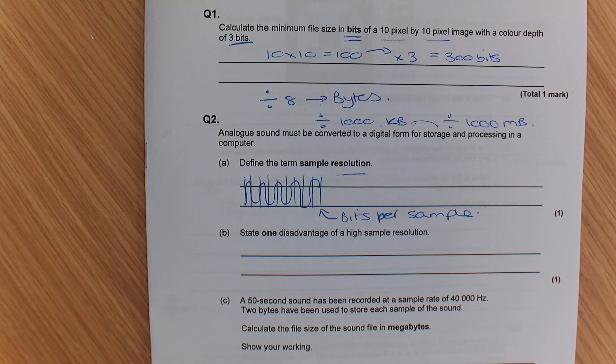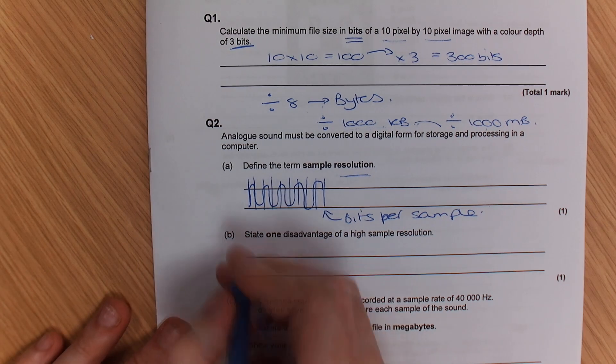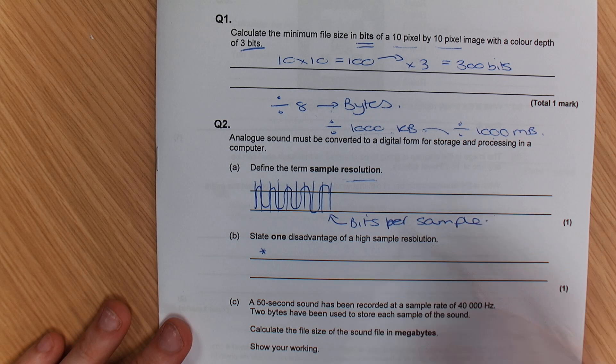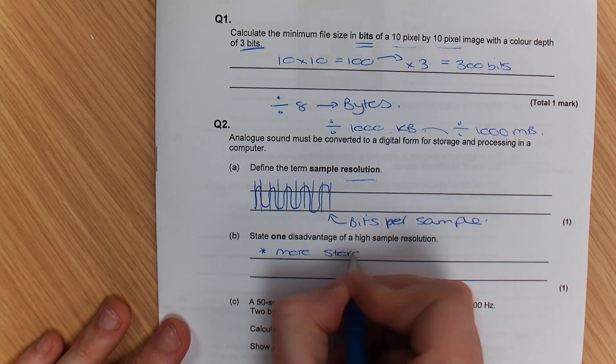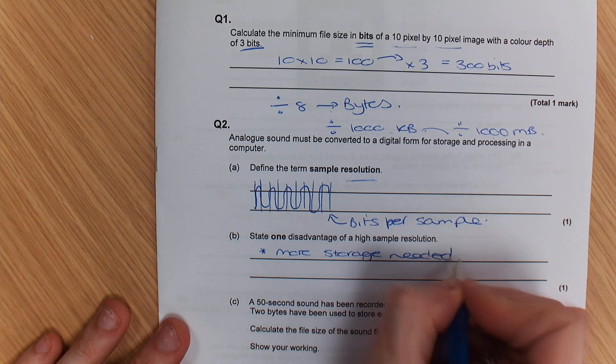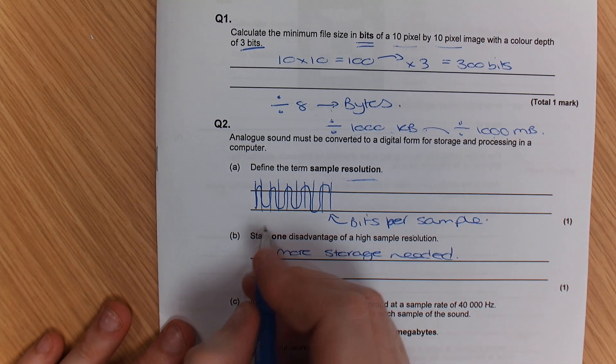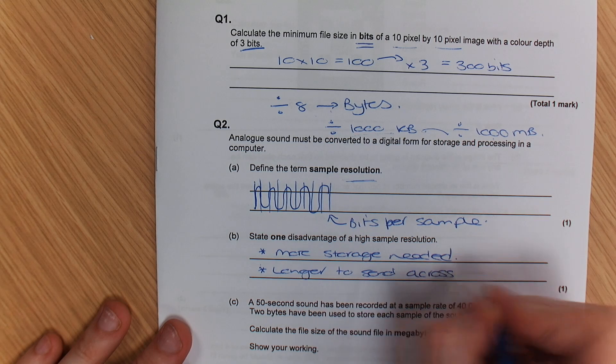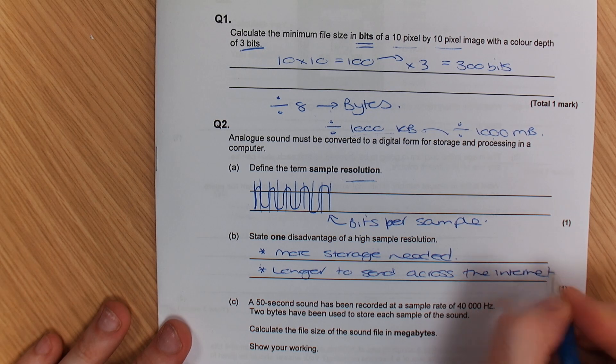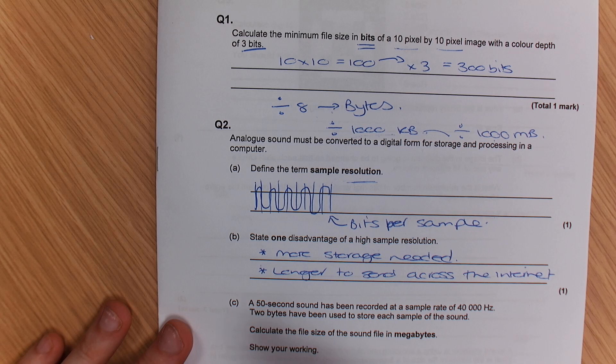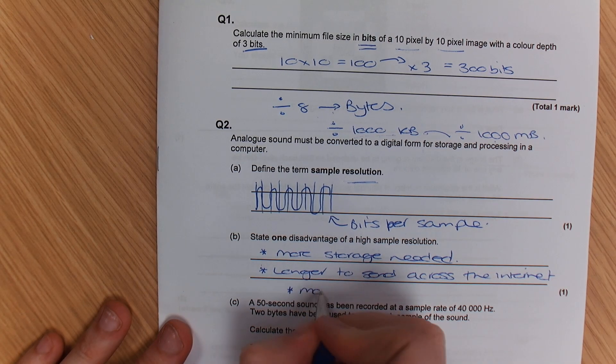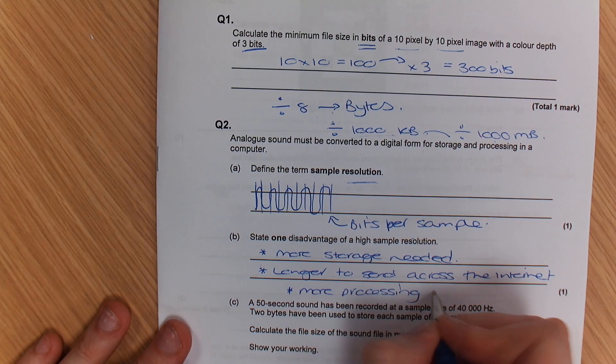What would be a disadvantage of having a higher sample resolution, and we've got one mark available, but there's a couple of answers to this. It uses more storage. Yes. If you have a higher sample rate, think about it. It's more bits per sample. So if I have a higher sample resolution, I'm going to have more storage needed. It would take longer to be sent, so for example, that email. Longer to send across the internet. Or you can say longer to upload or download. Now, the other thing is, you need more processing power when recording.